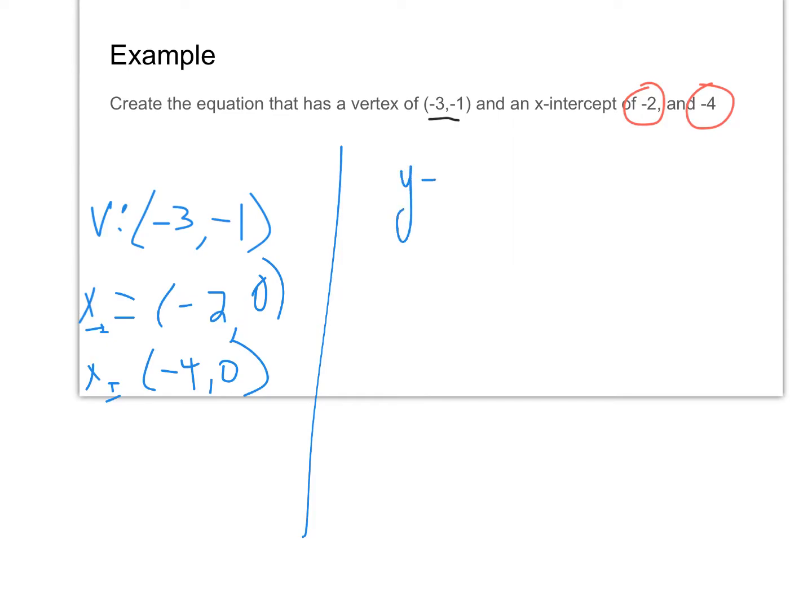So now let's go to our equation: Y equals A times X minus P times X minus Q. This is where these guys come in. This is going to go in for P, and this is going to go in for Q. Now we have a lot of variables: X's, Y's, and A. So the vertex is now going to become a point on our parabola. So negative one equals A times negative three minus negative two times negative three minus negative four.